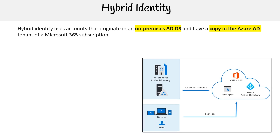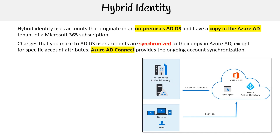This is Andrew Brown from ExamPro, and we're taking a more in-depth look at the hybrid identity model. Hybrid identity uses accounts that originate in an on-premises AD DS and have a copy in the Azure AD tenant of a Microsoft 365 subscription. Any changes that you make to AD DS user accounts are synchronized to their copy in Azure AD, except for specific account attributes.